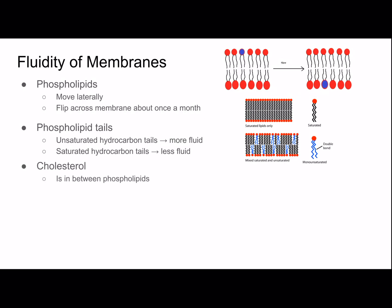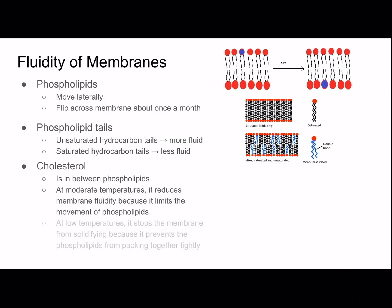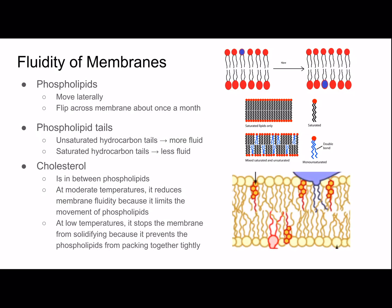Cholesterol is in between phospholipids in the plasma membrane. At moderate temperatures it reduces membrane fluidity because it limits the movement of phospholipids — it's wedged between them and stops them from moving freely. However, at low temperatures it stops the membrane from solidifying by preventing phospholipids from packing tightly. Cholesterol is extremely important in the membrane's fluidity.